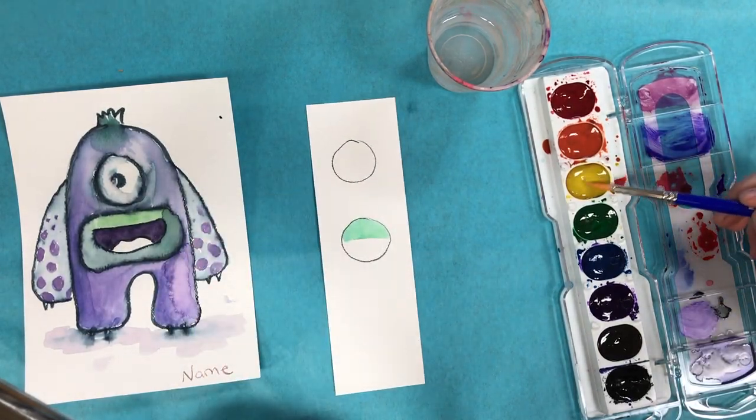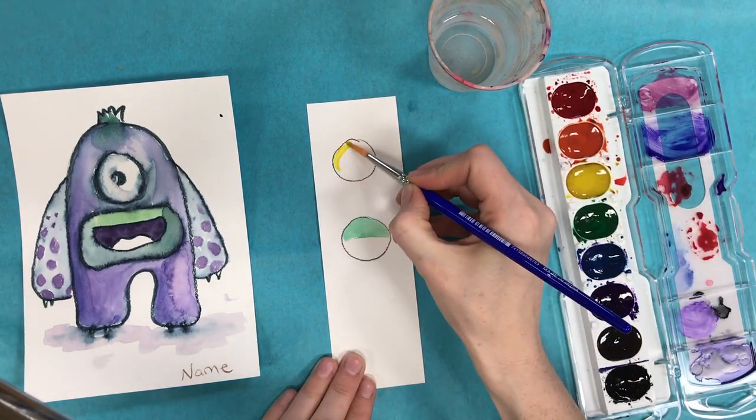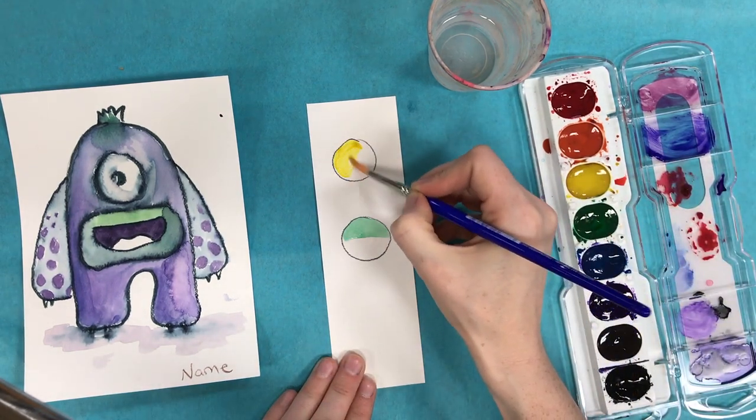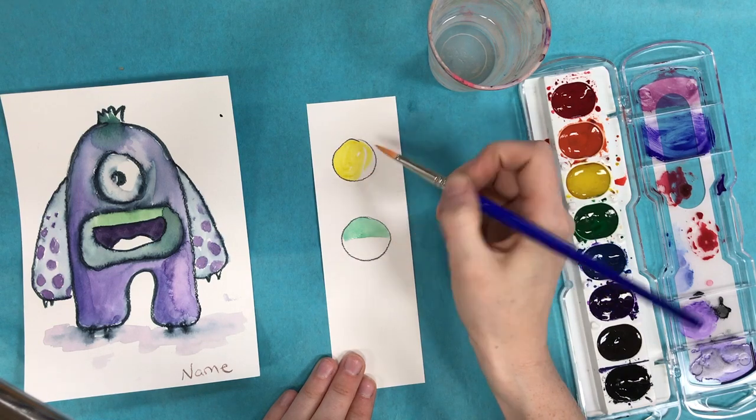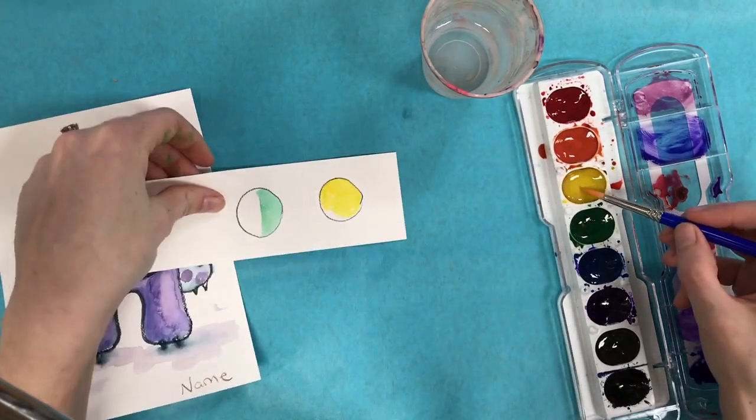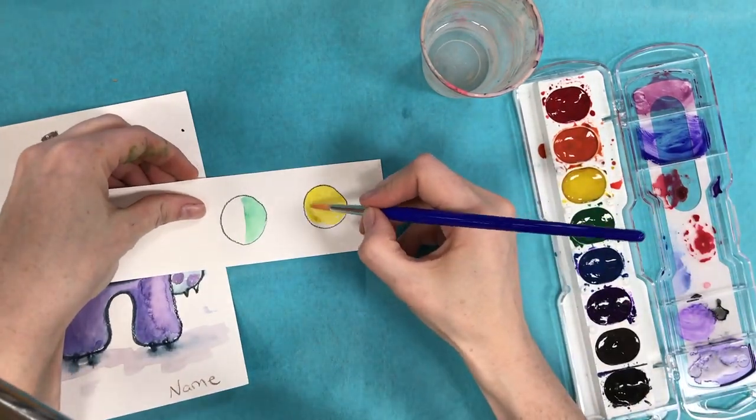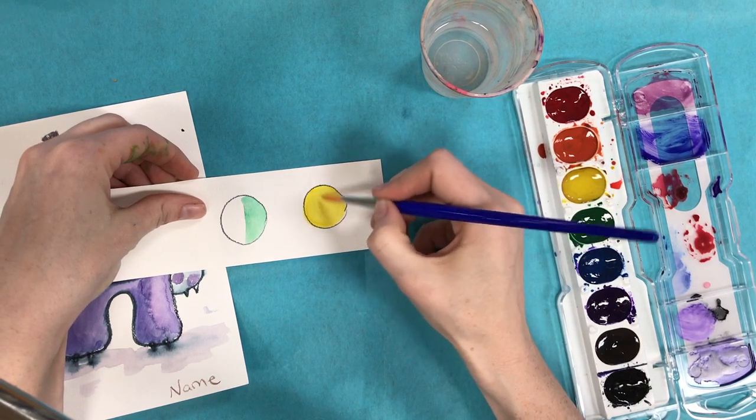I want to show you how to fill in an area. Now whenever you are painting, you want to fill in the entire area first and you don't want to stop and let it dry. You can turn your paper if that makes it easier to get to certain parts of it, but you want to fill it in all the way.